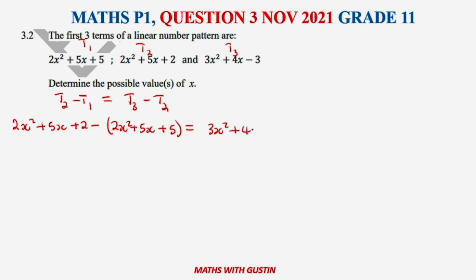We are going to substitute and remove the brackets where there's a negative. We're going to have -2x²-5x-5 equals 3x²+4x-3 minus 2x²-5x-2.